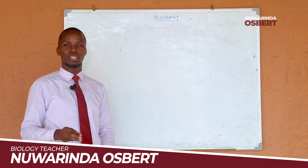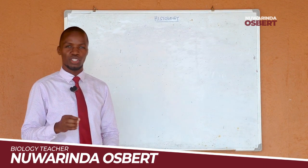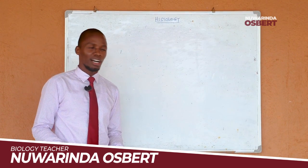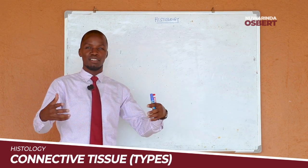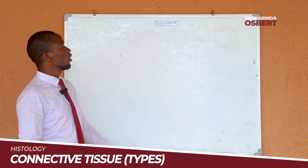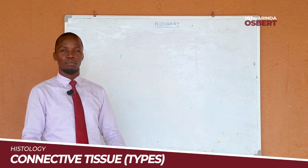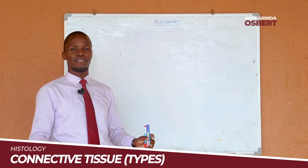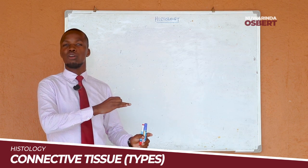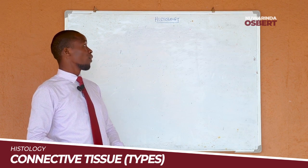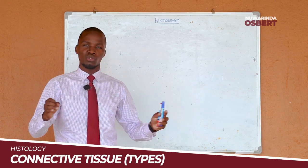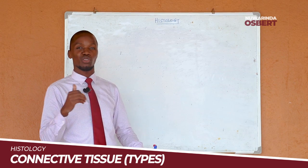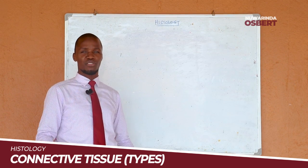In this series of episodes, we are looking at histology. Histology is a subtopic under cell biology, taught in advanced level biology for those in Uganda. In the previous episode, we were able to break down epithelial tissues in detail. One episode covered simple epithelial tissue, another covered compound epithelial tissue, and another covered granule epithelial tissue. If you have not checked all those tissues, please go and check them first — there is something very interesting there.